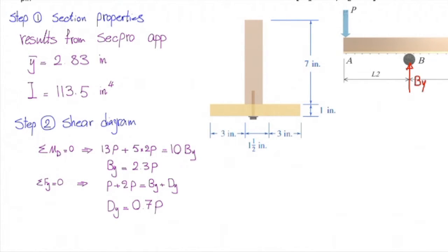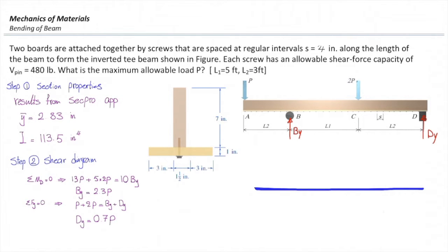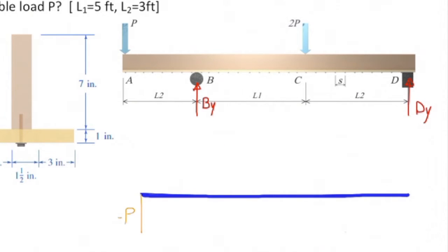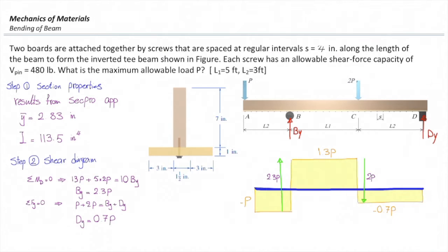Once we determine the reaction forces we can draw the shear diagram. Starting from the left following the direction of the concentrated force, the initial value of shear force would be negative P, constant from A to B. At B there is a jump up by the magnitude of By which is 2.3P, giving us 1.3P constant all the way to C. There would be another jump going downward with the magnitude of 2P which gives us negative 0.7P at that point, and that remains constant until reaching point D which gives us zero shear force.